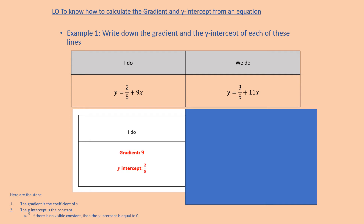The y-intercept, where it crosses the y-axis, is going to be plus two-fifths. In y equals mx plus c, c is the constant — two-fifths. So the gradient is the coefficient of x, and the y-intercept is the constant.